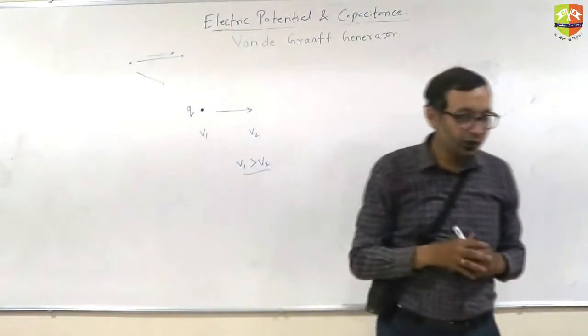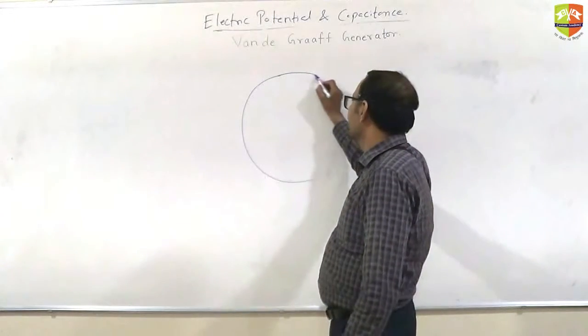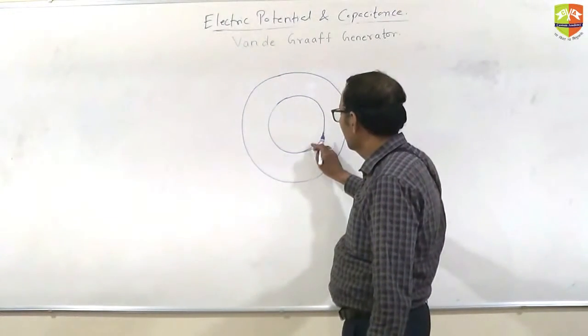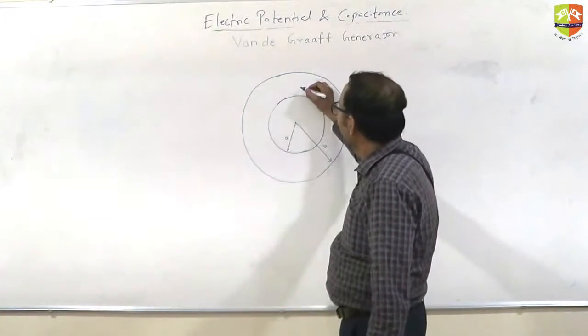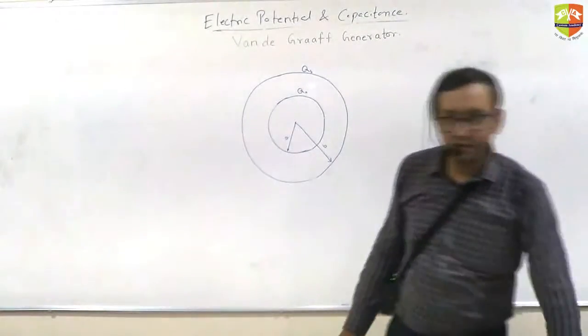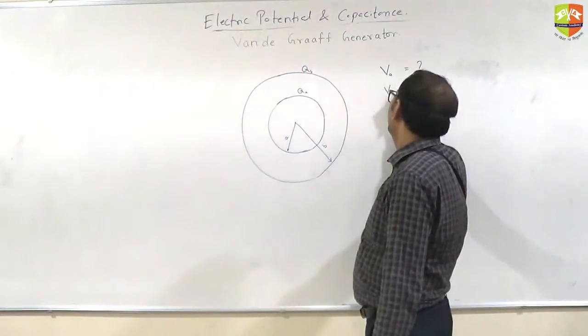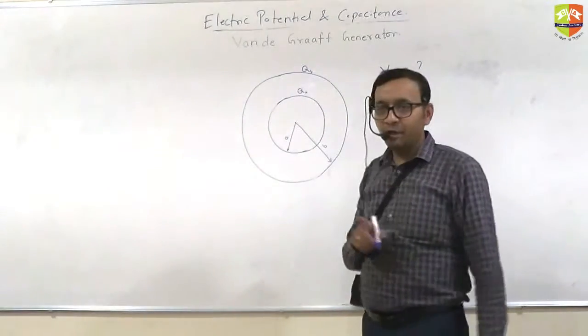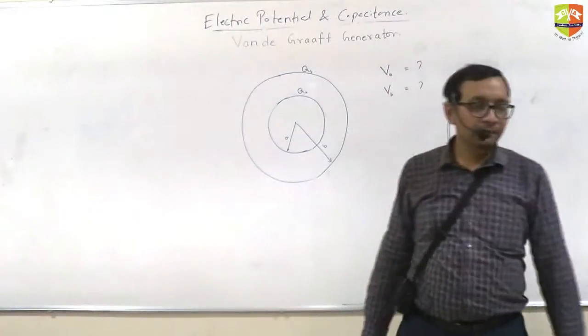Fine? So that is one thing which you need to keep in mind when we talk about Van de Graaff. Now, let's take two concentric spherical shells. This is radius A, that is radius B. The inner sphere has charge QA and the outer sphere has charge QB. Both are positive charge. Understood, right? Now, I want you to find out potential of A is what and potential of metallic sphere B is what. Both are metallic concentric spheres. So entire metal will have same potential. So I want to find out potential of the outer metallic sphere and potential of the inner metallic sphere. Try to do this.